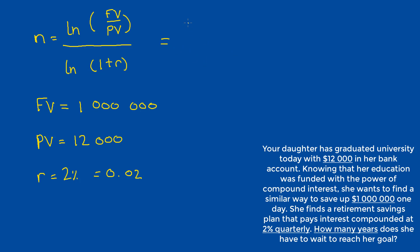So we plug these values in, natural log of 1,000,000 divided by 12,000 divided by the natural log of 1.02, which should be equal to 223.35 quarters.